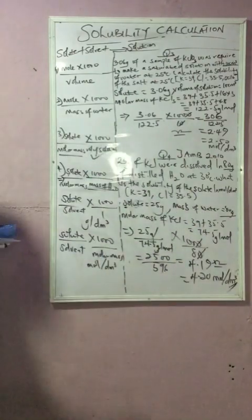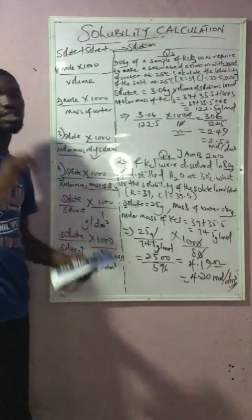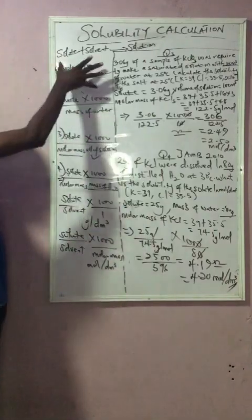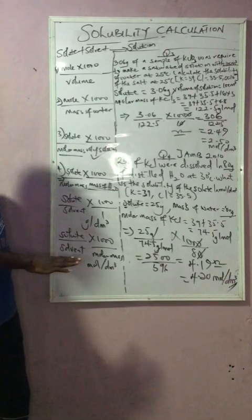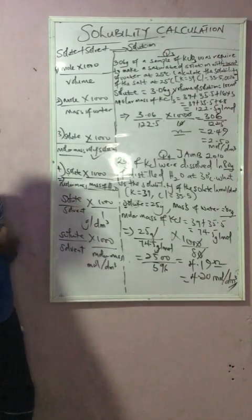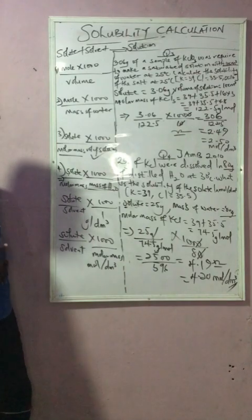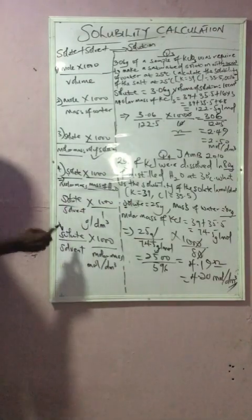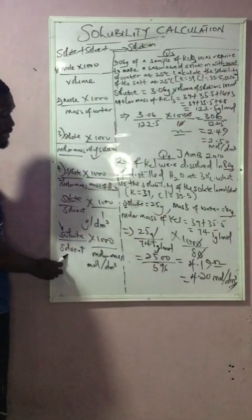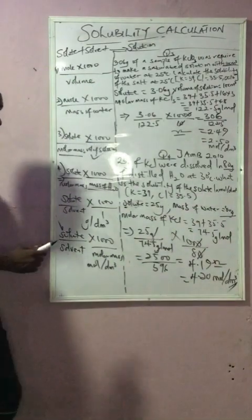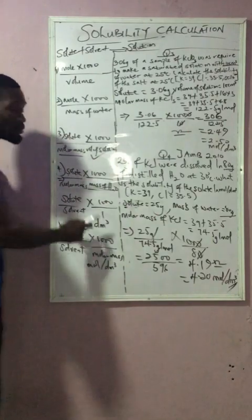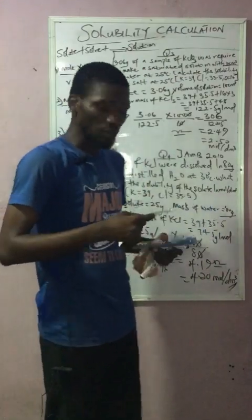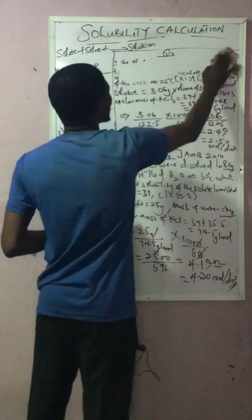Let's quickly take the last question, but before that — when I was giving the definition of solubility I stated six formulas. All the formulas on the board serve as a guide. Each of them can be used for any related solubility question. The solute here is 25 grams, the solvent is 80 grams.